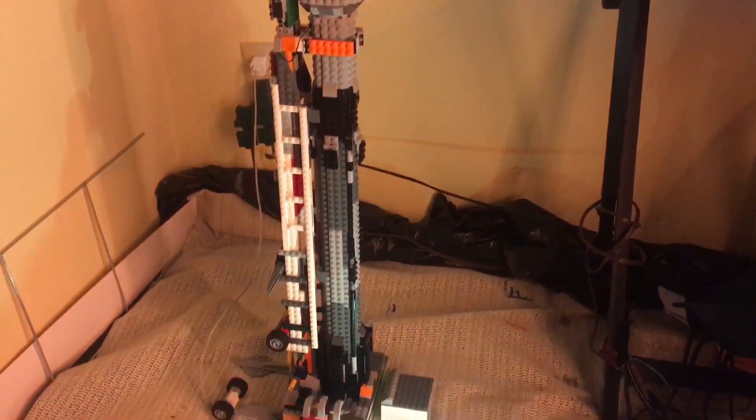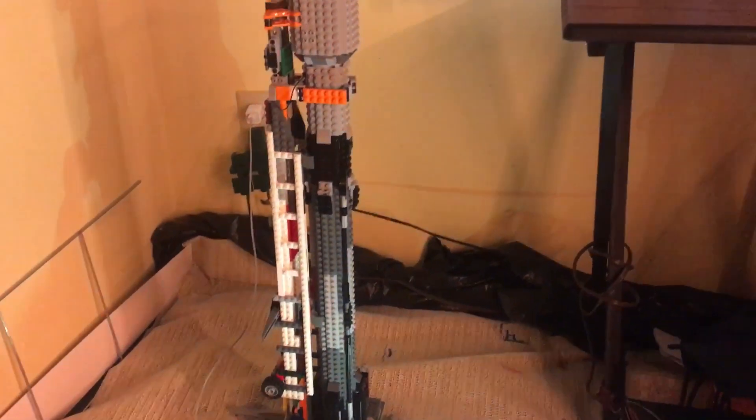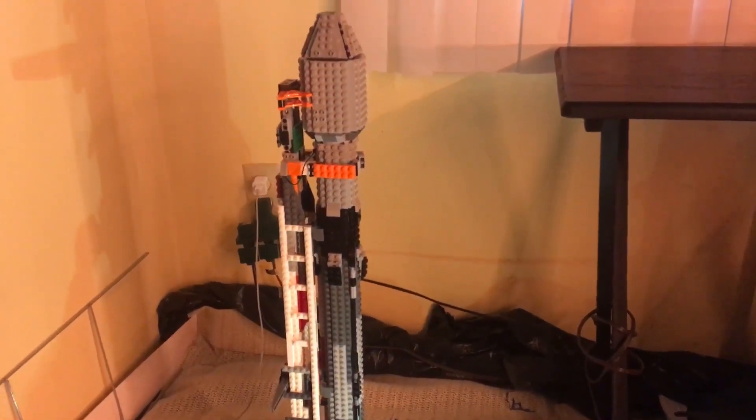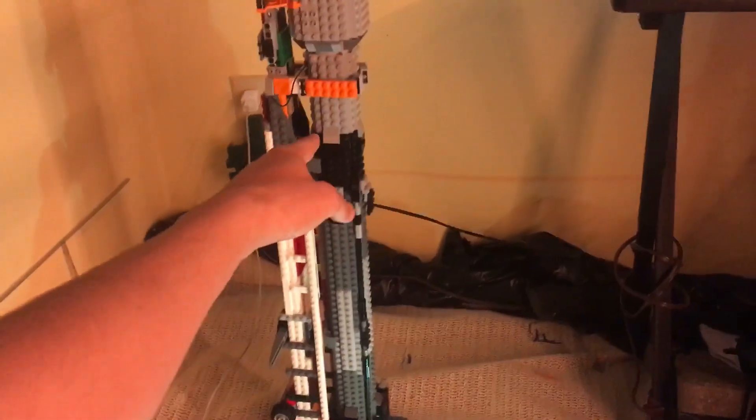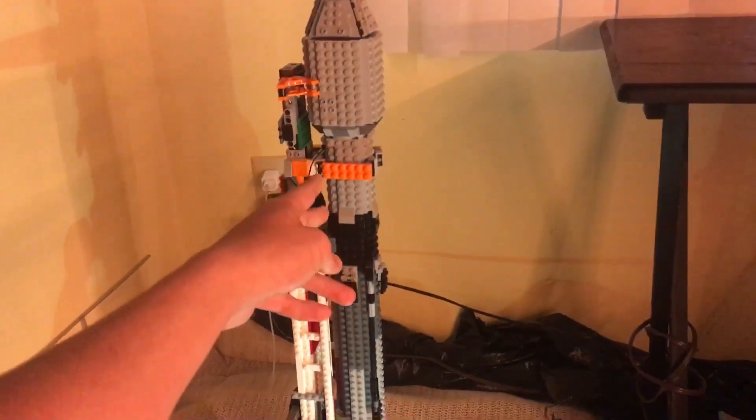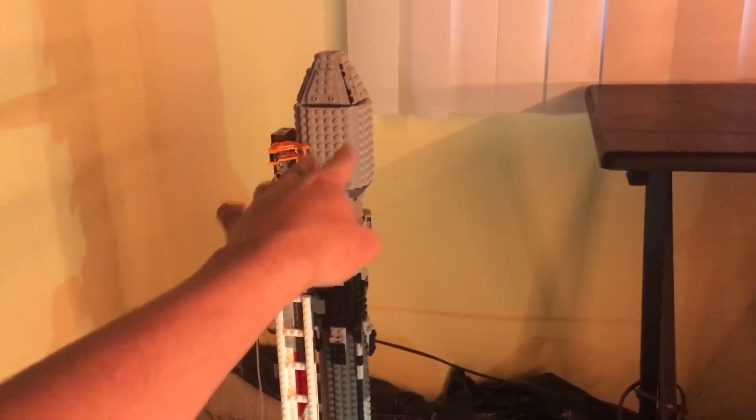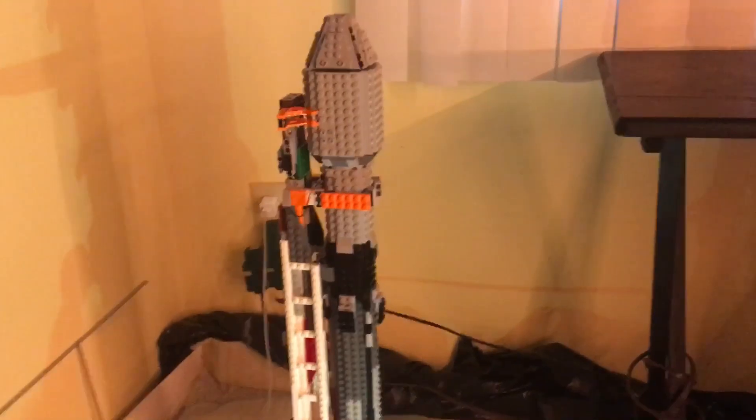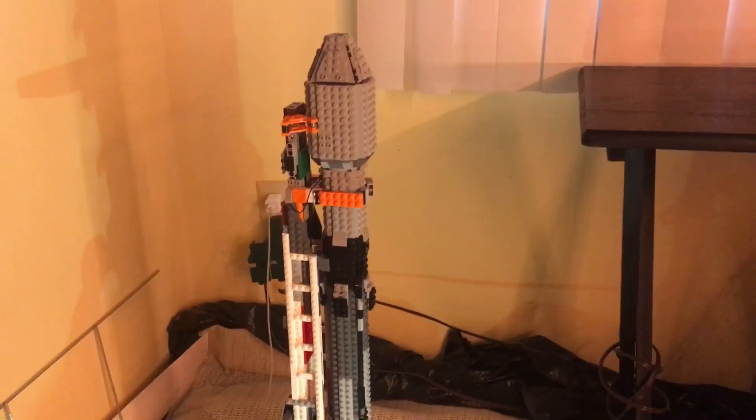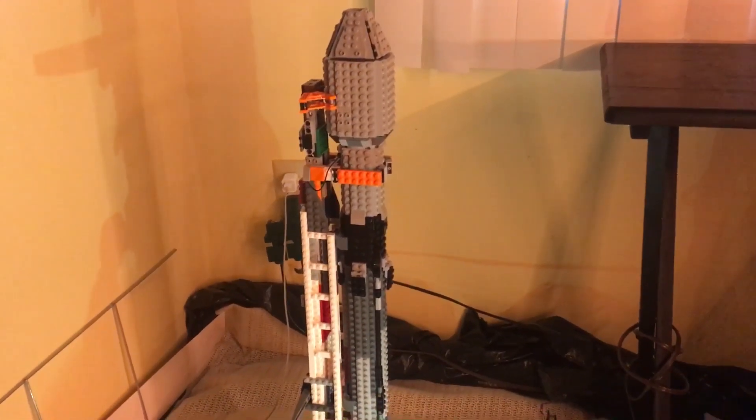Let's start off with Falcon 9. Falcon 9 is a two-stage bi-propellant launch vehicle. The first stage is this black cylinder and everything below it. The second stage is this gray part, and the payload fairings is the top, kind of egg-looking part that you can see. Let's take a more in-depth look at Falcon 9.